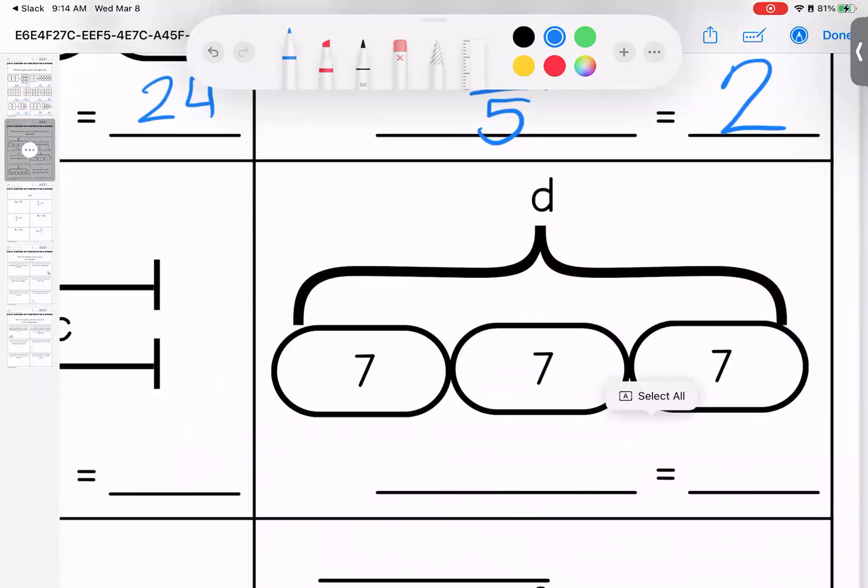Down here, variable on top, again, division. If I take d and divide it by 7, it's going to equal 3.